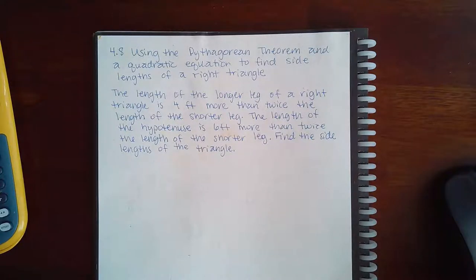Here we have 4.8 using the Pythagorean Theorem and a quadratic equation to find the side lengths of a right triangle.